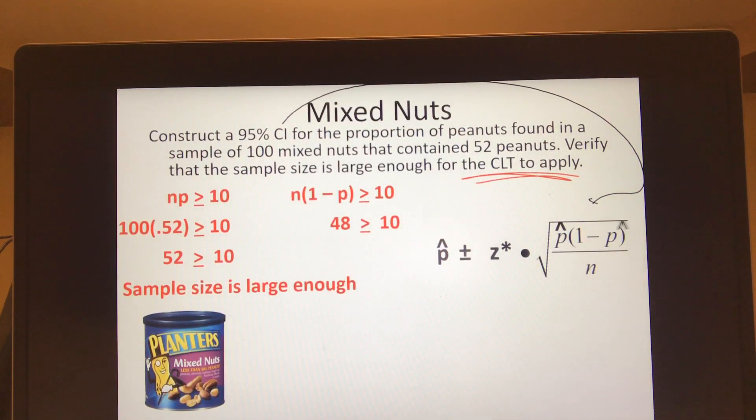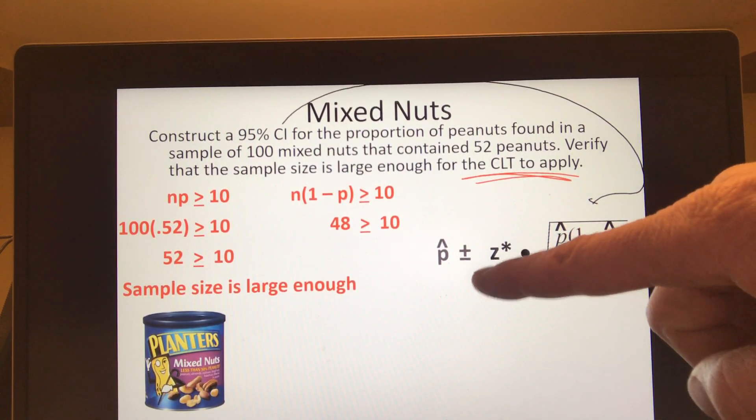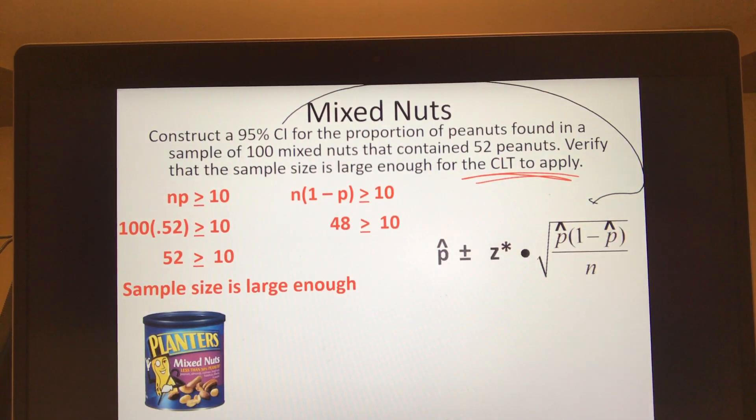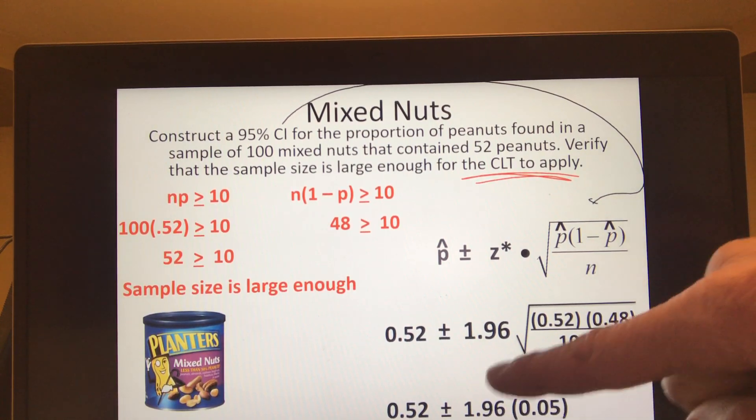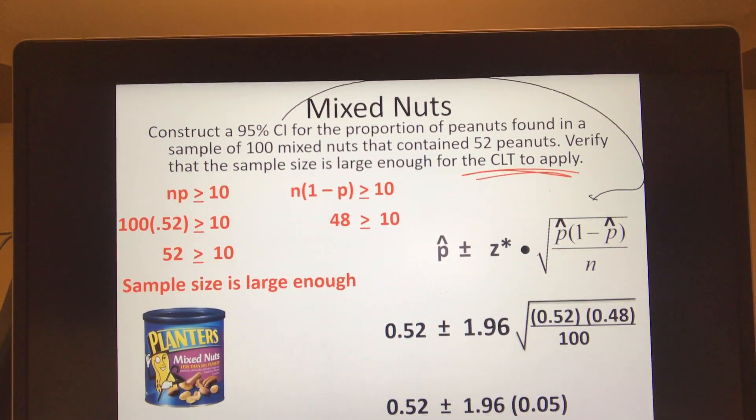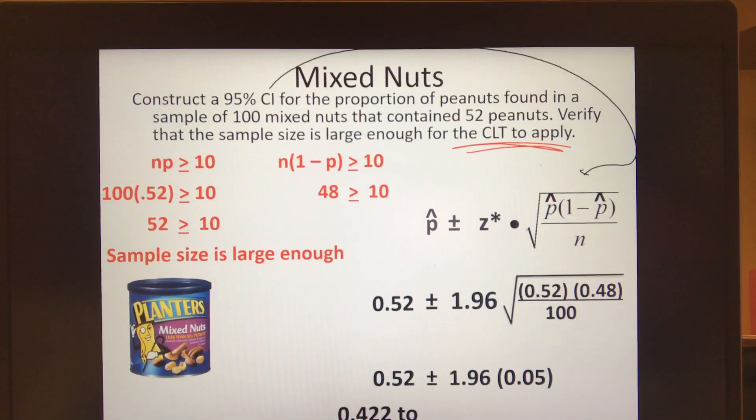So the second part of this is that calculation where you find your standard error here, throw in 1.96 for your confidence interval, and then your sample proportion 0.52, and see what happens. So hopefully if you did all this calculation in here for your standard error with the 100 samples, you get 0.05 for standard error. This is your margin of error.